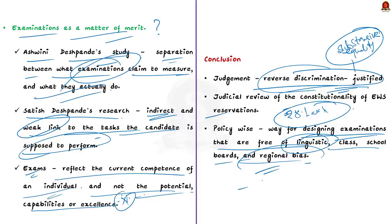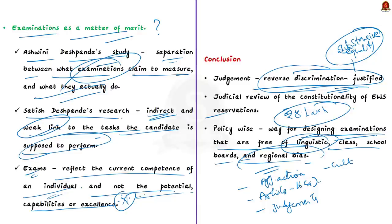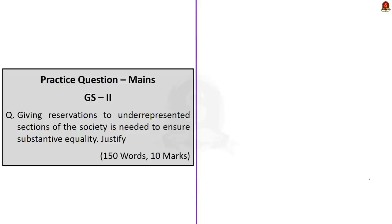In this article we have seen what affirmative action is, the constitutional articles regarding affirmative action, some important Supreme Court judgments related to it, and we have also discussed cultural capital — which is having assets that give us social mobility.